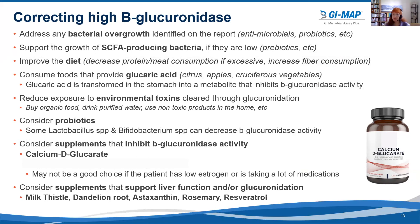Other supplements to consider are those that support liver function and glucuronidation. The top supplements for this purpose are milk thistle, dandelion root, astaxanthin, rosemary, and resveratrol. So if you see elevated beta-glucuronidase on the GI MAP report, these are some of the top considerations and actionable steps to help your patient lower their beta-glucuronidase activity.